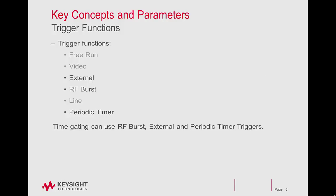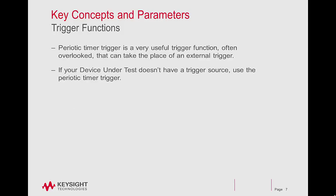Trigger functions: Time-gating can use RF burst, external, and periodic timer triggers. Periodic timer trigger is a very useful trigger function, often overlooked, that can take the place of an external trigger. If your device under test doesn't have a trigger source, use a periodic timer trigger.